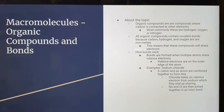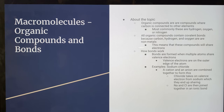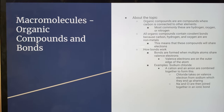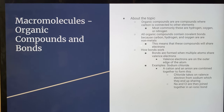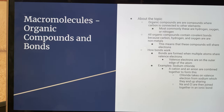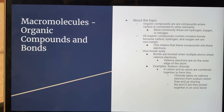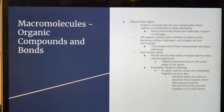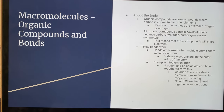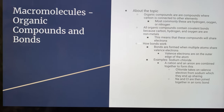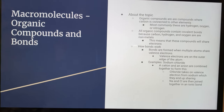An example of bond formation is sodium chloride. A cation and an anion are combined to form this — chloride takes a valence electron from sodium, which they do end up sharing, almost hopping electron rings but still sharing at the end. Both sodium and chloride are then joined together in an ionic bond to create sodium chloride.